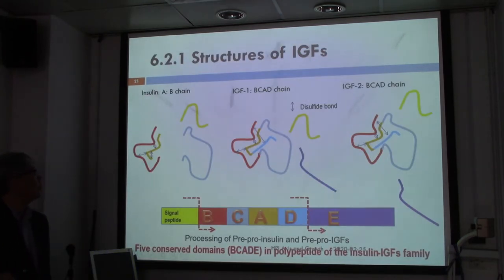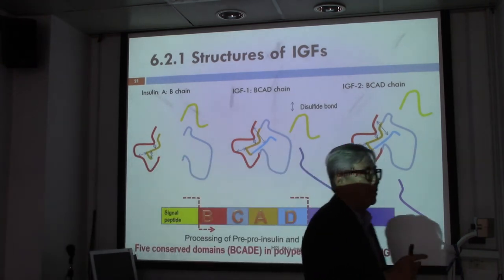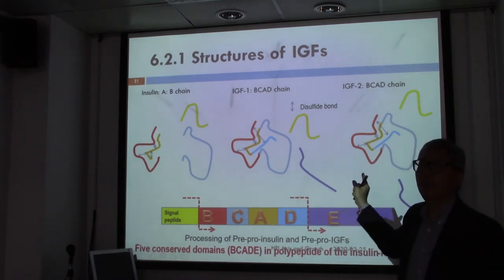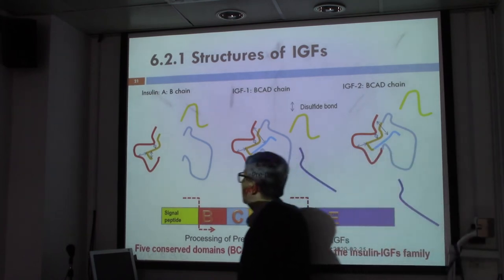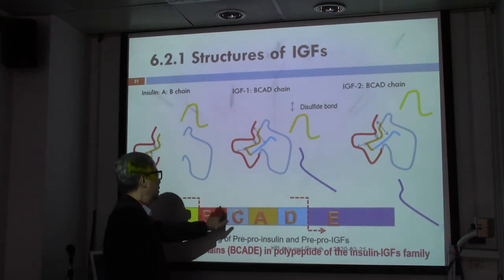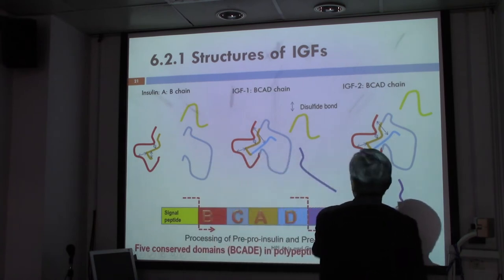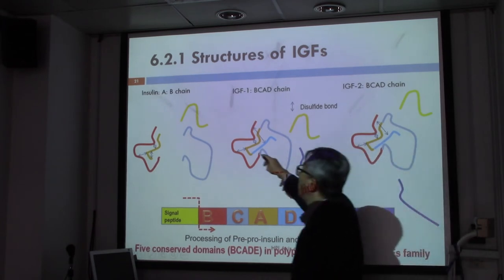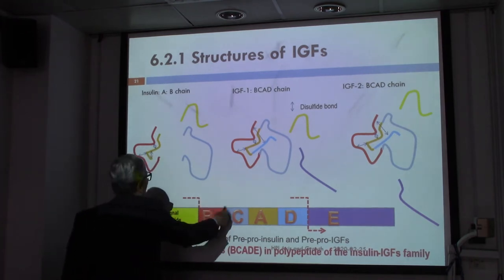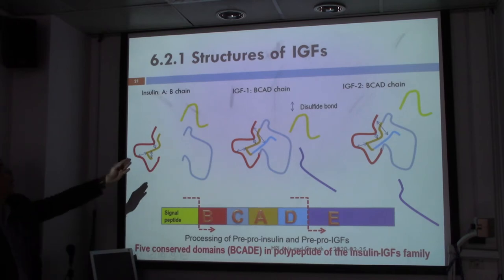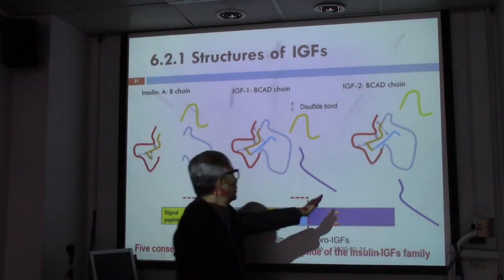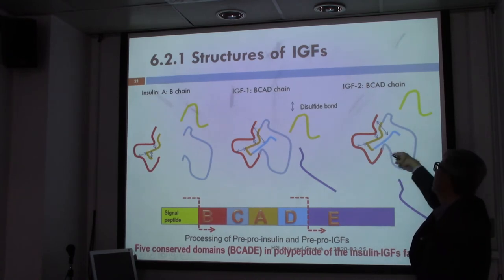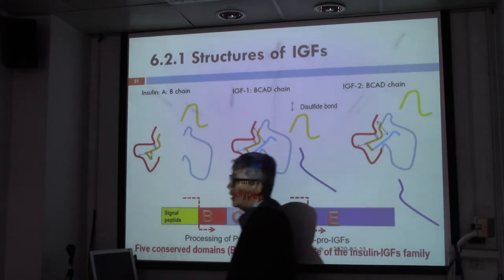There are actually two IGFs: IGF-1 and IGF-2. Remember when we talk about insulin — we have insulin, insulin-like growth factor 1, and insulin-like growth factor 2. They all belong to the same family with a long peptide: a single peptide with B chain, connecting chain, A chain, B chain, and E chain. What they have in common is that all the E peptides are removed. For IGF-1 and IGF-2, the E domain is gone and the C peptide is gone, but the BCAD domain remains intact with three disulfide loops.